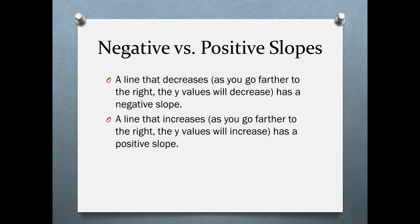Negative versus positive slopes: a line that decreases — where y values decrease as you go farther to the right — has a negative slope. And a line that increases — where y values increase as you go farther to the right — has a positive slope.